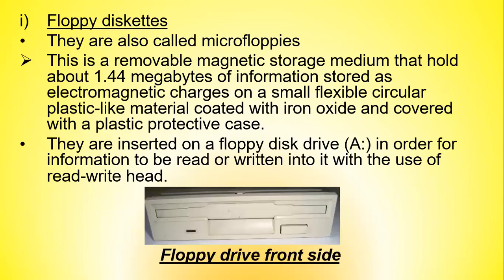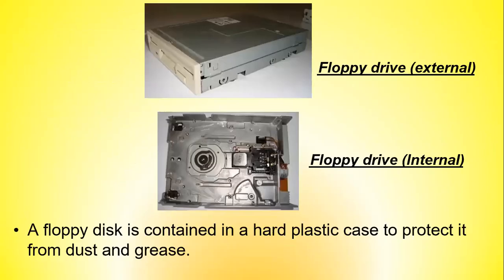Floppy diskettes, also called micro floppies, were removable magnetic storage media that held about 1.44 megabytes of information stored as electromagnetic charges on a small flexible circular plastic material coated with iron oxide and covered with a plastic protective case. They were inserted on a floppy disk drive (abbreviated as A:) in order for information to be read or written using a read-write head. A floppy disk was contained in a hard plastic case used to protect it from dust and grease.